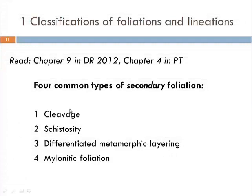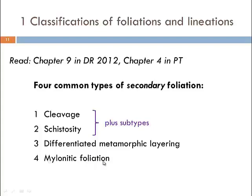We are interested in secondary foliations — foliations that are superimposed onto primary structures in the rock by deformation processes. There are four important ones: cleavage and schistosity, which have subtypes; differentiated metamorphic layering, implying that material segregates during deformation and metamorphism; and mylonitic foliation, which also has similarities with cleavage but requires further characteristics to fulfill its definition.